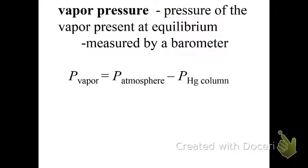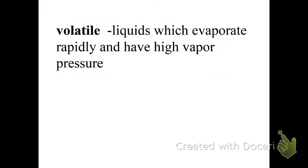The vapor pressure of a vapor present at equilibrium is measured by a barometer, usually a mercury column. The vapor pressure is equal to the pressure of the atmosphere minus the pressure in the mercury column. If something is volatile, it means it has a propensity to evaporate very rapidly. Gasoline has a high volatility, water is not very volatile.